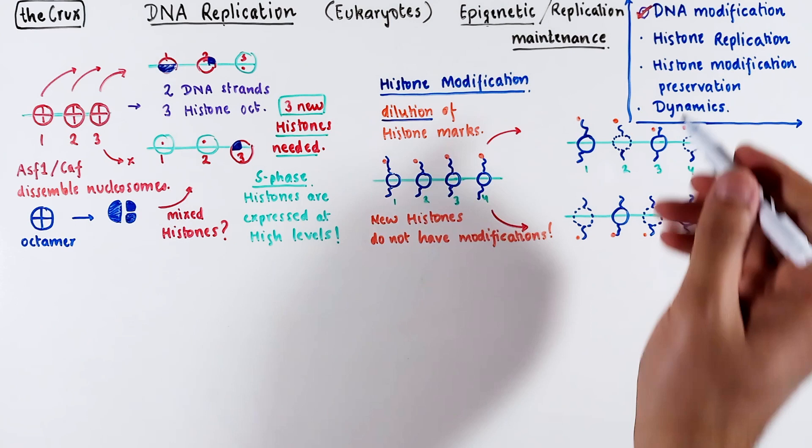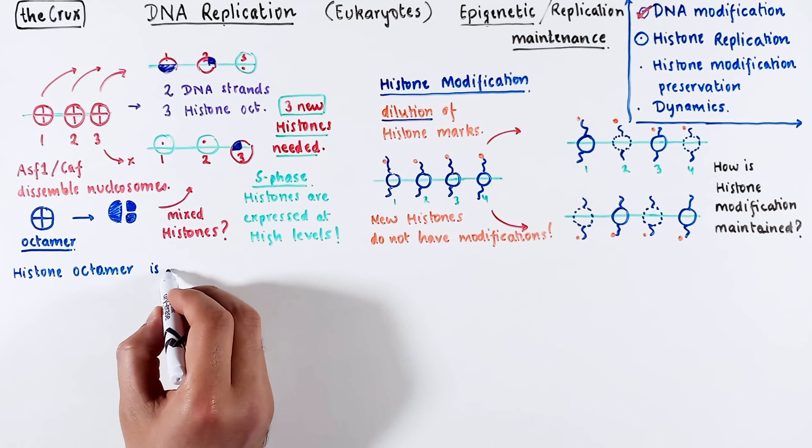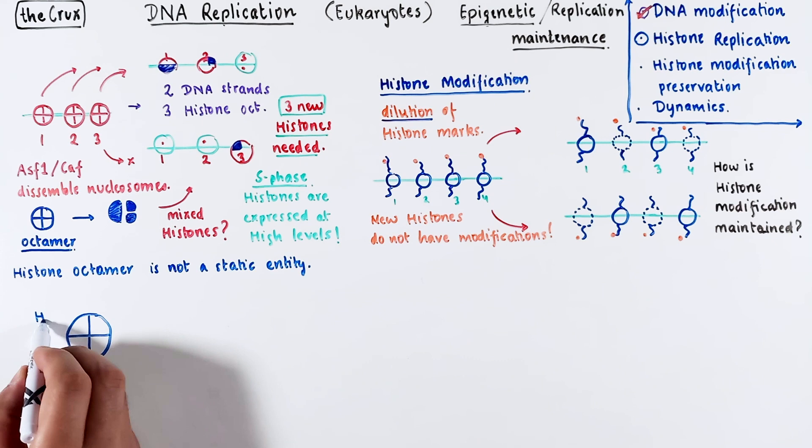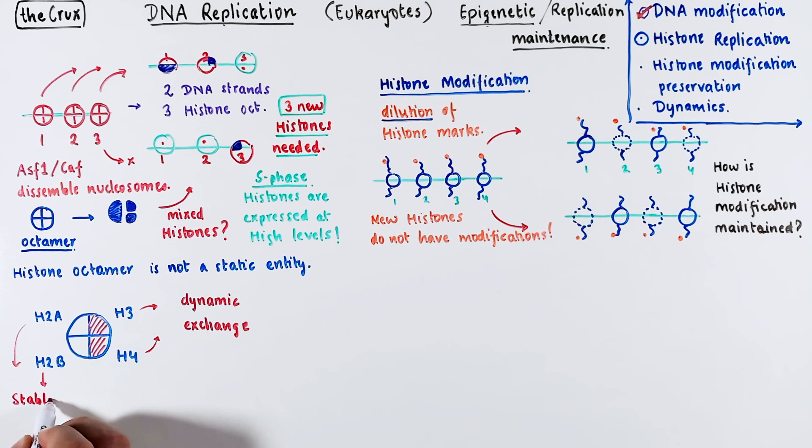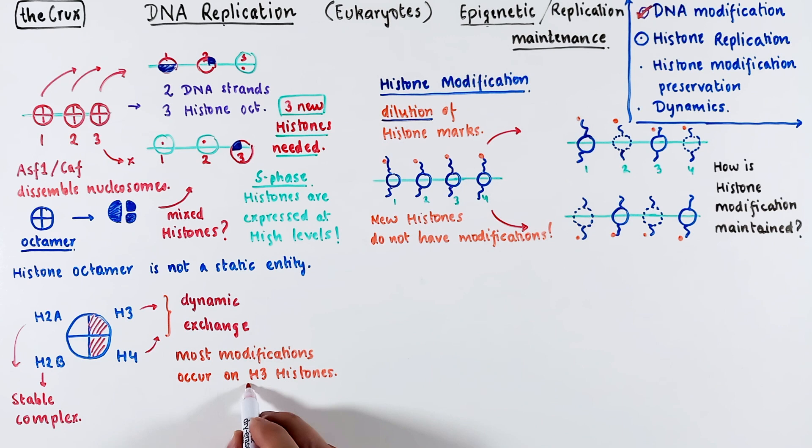Now let's focus on histone replication. The simple thing to note is that histone octamer is not a static thing. Yes, it is made of four different histones present as dimers, but it is not in a fixed state. The H3 and H4 dimers are constantly moving in and out of an octamer. The H2 histones, on the other hand, are a bit more stable.